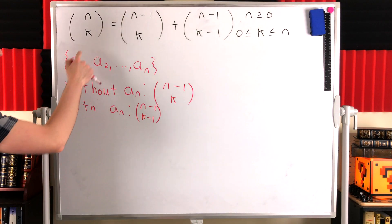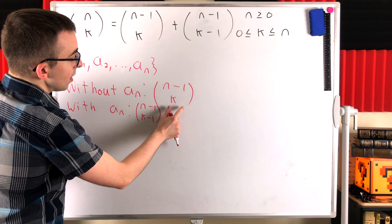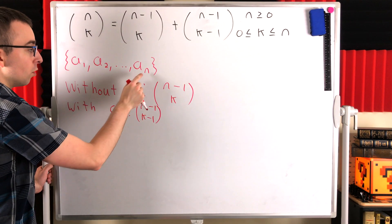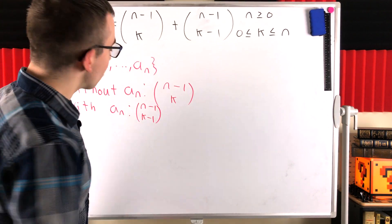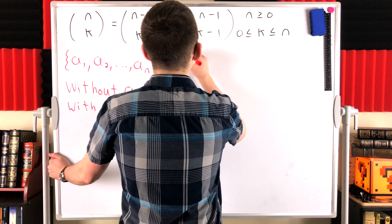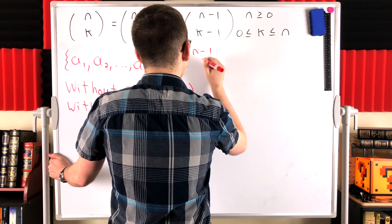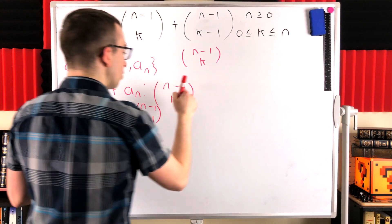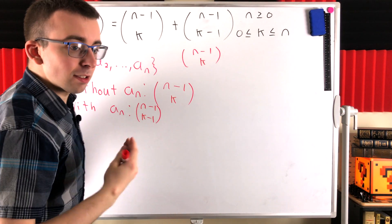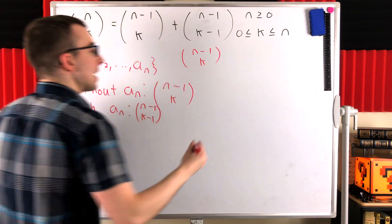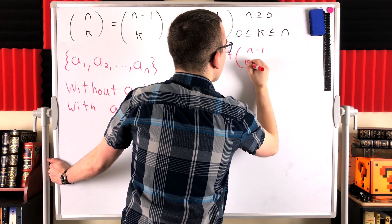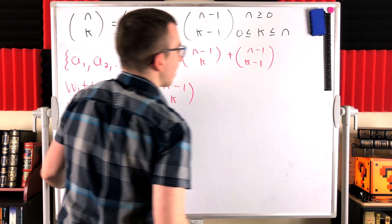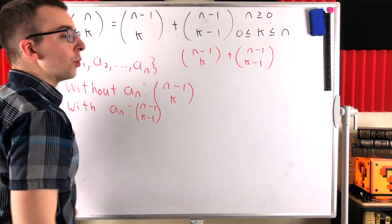We've separated this total count into the groups or the collections that do not include a_n and the ones that do include a_n. So to get the total, we just add them together. And of course, that gives us precisely what we want. It's n minus 1 choose k, the collections of size k that don't include a_n, plus n minus 1 choose k minus 1, the collections of size k that do include a_n.